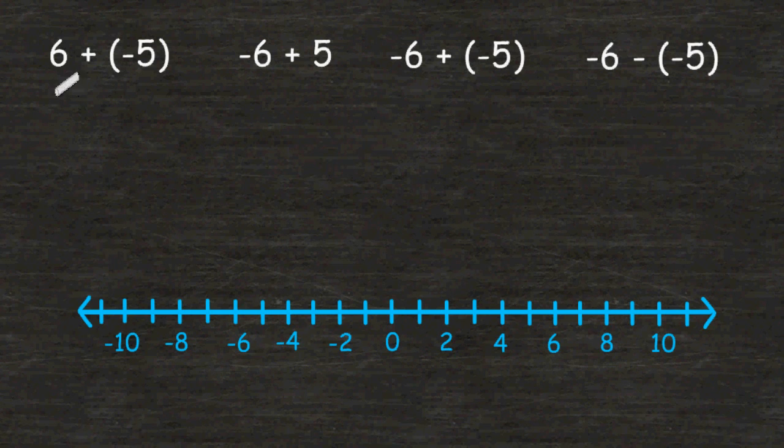The first problem reads 6 plus negative 5. So that means we have to start at positive 6 on the number line, which is located right here, and then we have to move backwards a distance of 5, which is really the same thing as 6 take away 5. So starting at positive 6, let's move to the left a distance of 1, 2, 3, 4, and 5. That would place us at positive 1.